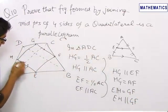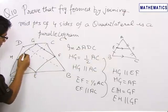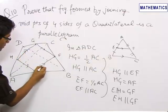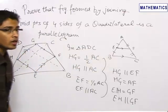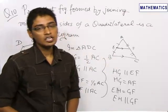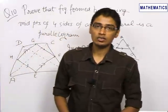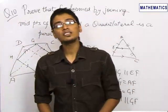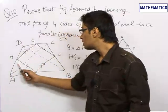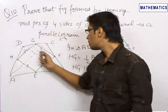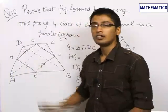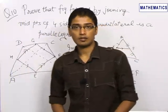Now, this side is parallel to this and equal to this, and similarly this side is parallel to this and equal to this. So we have got two pairs of sides which are parallel to each other and equal in length, and this is the property of a parallelogram. Hence, the figure formed by joining the four midpoints of the four sides of a quadrilateral is definitely a parallelogram.